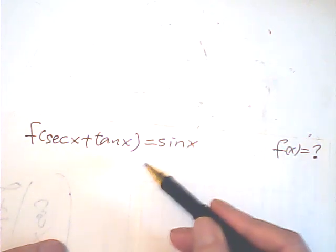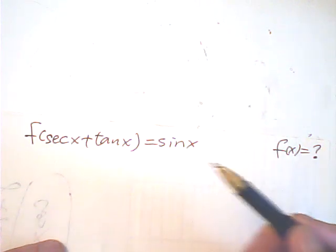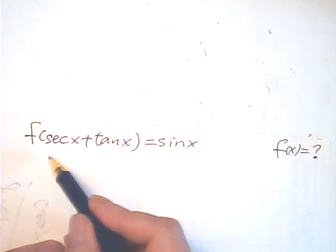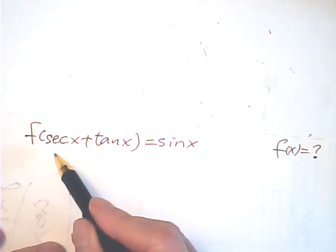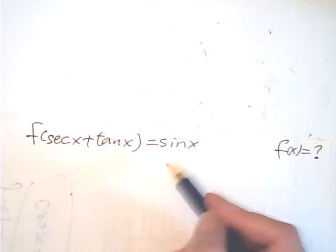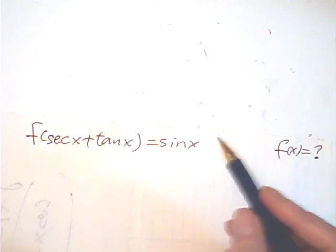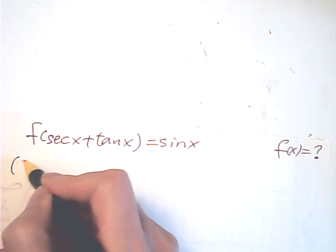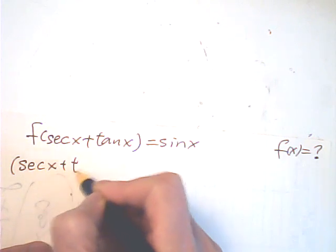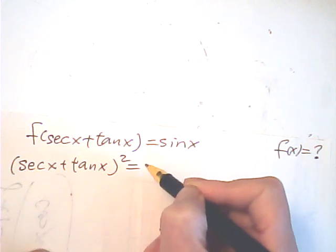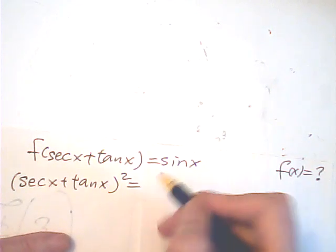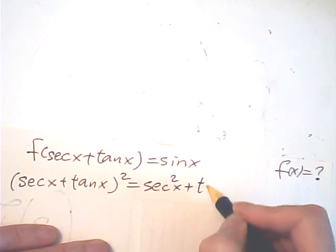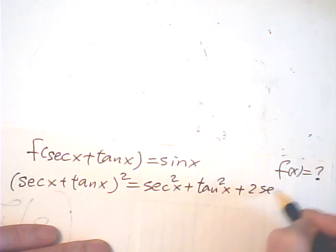To build up this relation directly is difficult, so I'd rather start from the other side to get sine x. I'll try to use existing formulas relating to secant and tangent to find the relation for sine x. So after some trials, I start this way: (sec x + tan x)² equals sec²x + tan²x + 2·sec x·tan x.